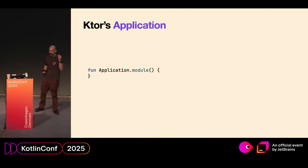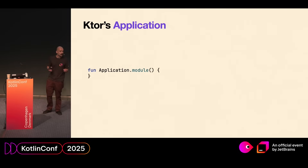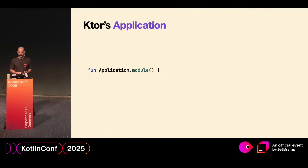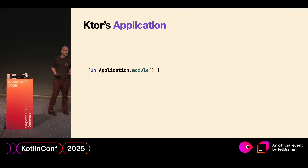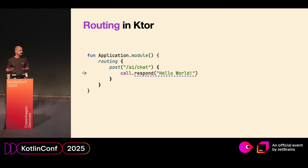So if you're familiar with Ktor, you might immediately think about the application class. The application class lies at the core of every Ktor application or server. It's where we do things like install plugins, like content negotiation, metrics, and also routing. And here we have a simple post endpoint which simply responds a hello world to the request.